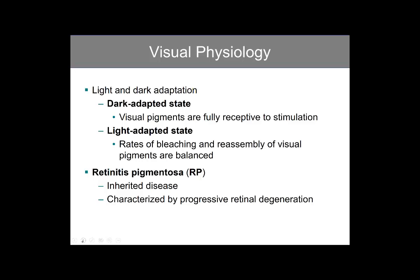During the light adaptive state, the rate between bleaching and the reassembly of those visual pigments are maintained homeostatically. One pathology associated with vision is retinitis pigmentosa, an inherited disorder in which there is progressive retinal degeneration and eventually blindness.